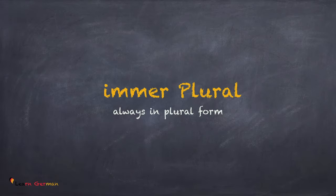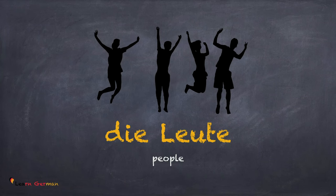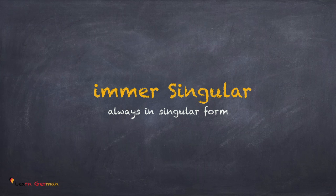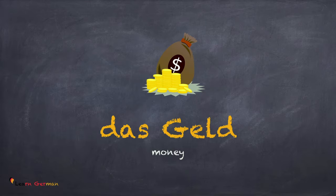Immer Plural: words which are collective and are not used in the singular form — for example, Die Eltern or Die Leiter. Immer Singular: similarly there are some words which don't have a plural form — for example, Die Zeit or Das Geld.